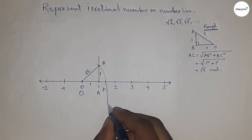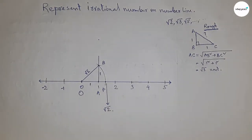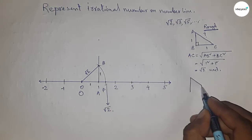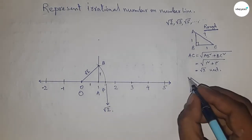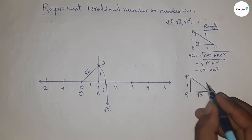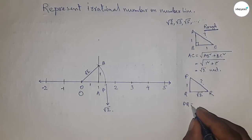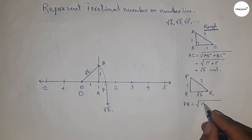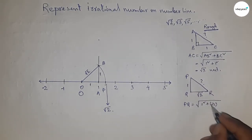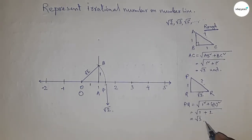Next, talking about root 3. First the concept: if there is a right angle triangle PQR with base root 2 and height 1, then what is the hypotenuse? By a similar method, hypotenuse equals root over base squared plus height squared, which gives root 3 units.